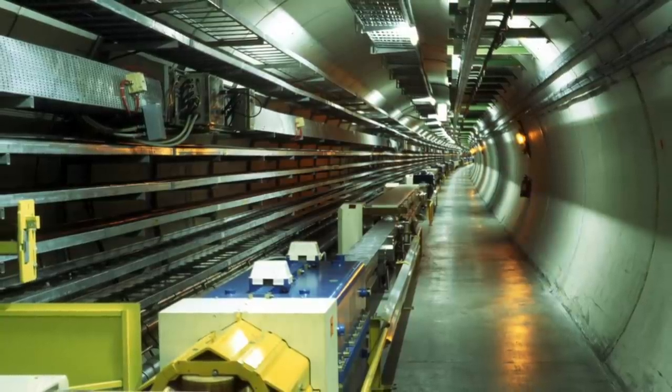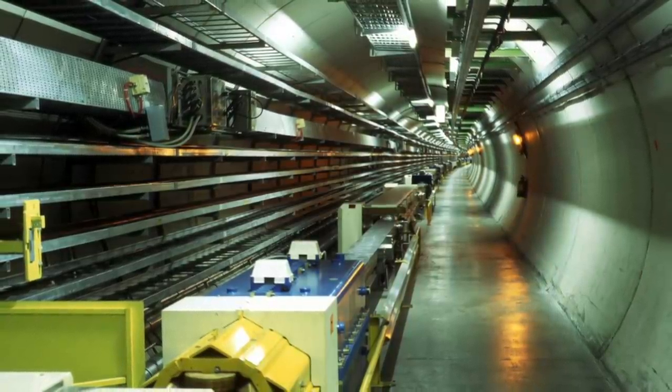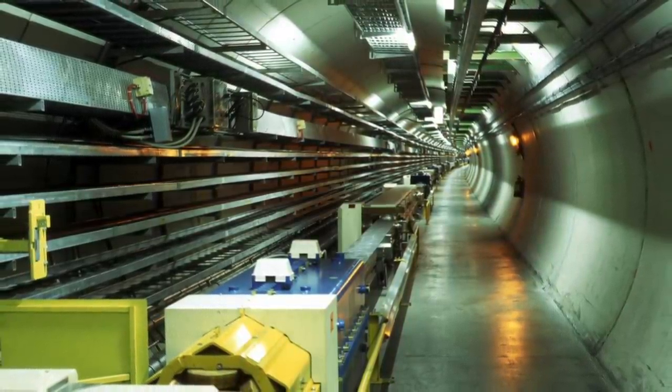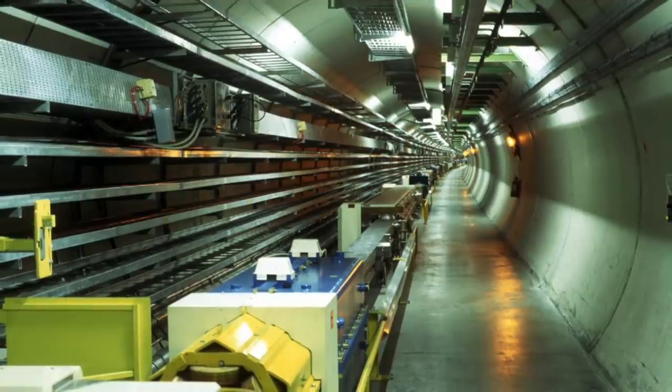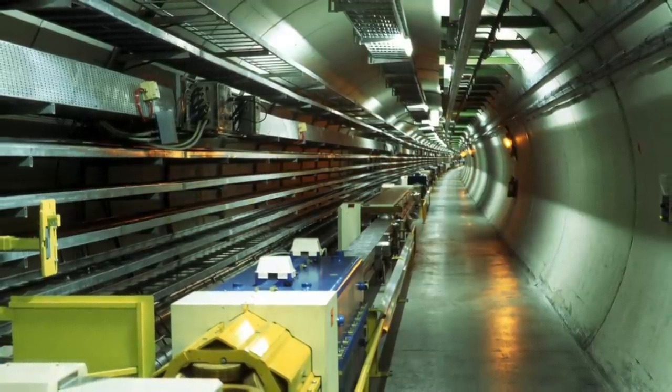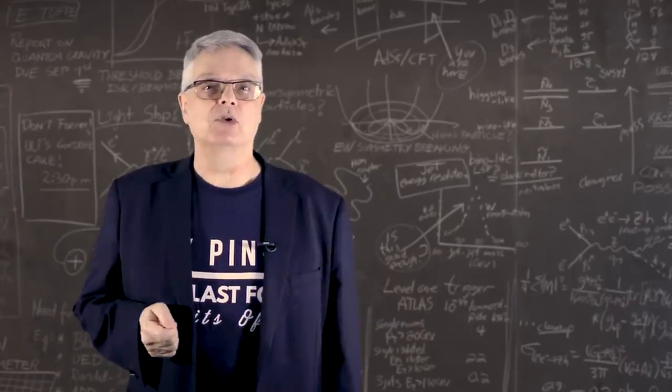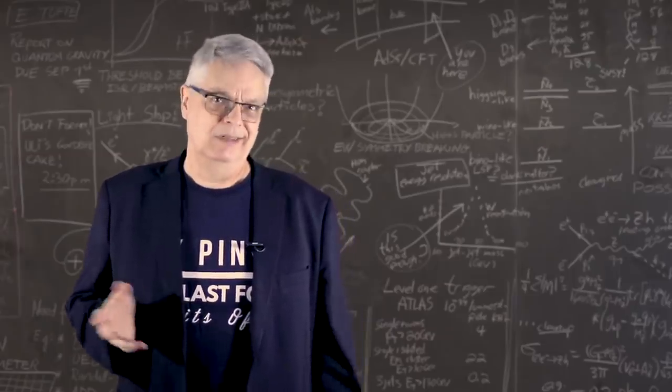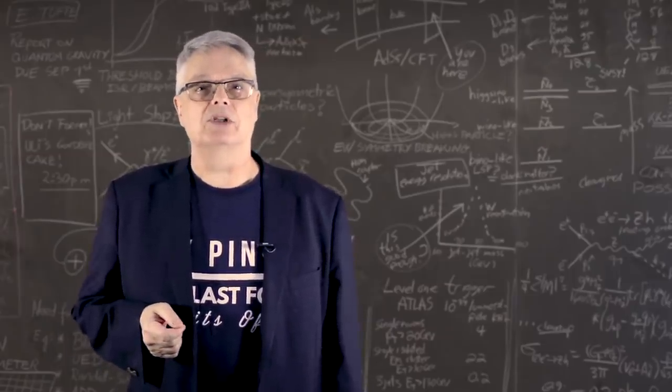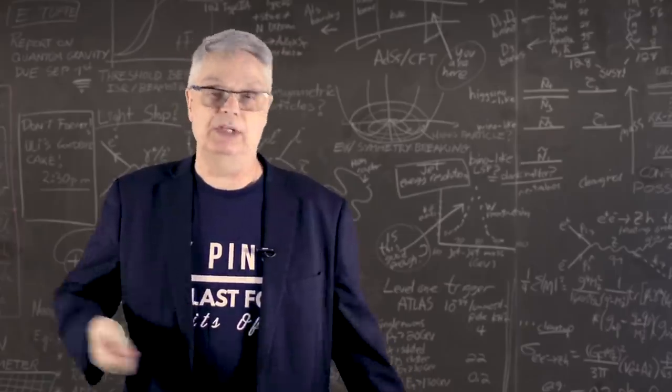An accelerator called LEP operated at the CERN laboratory from 1989 to 2000. It produced some 18 million Z bosons distributed between four distinct experiments. These experiments measured the properties of the Z boson to exquisite precision. It will be a long time before the LEP measurements are beat. Indeed, they may never be surpassed.